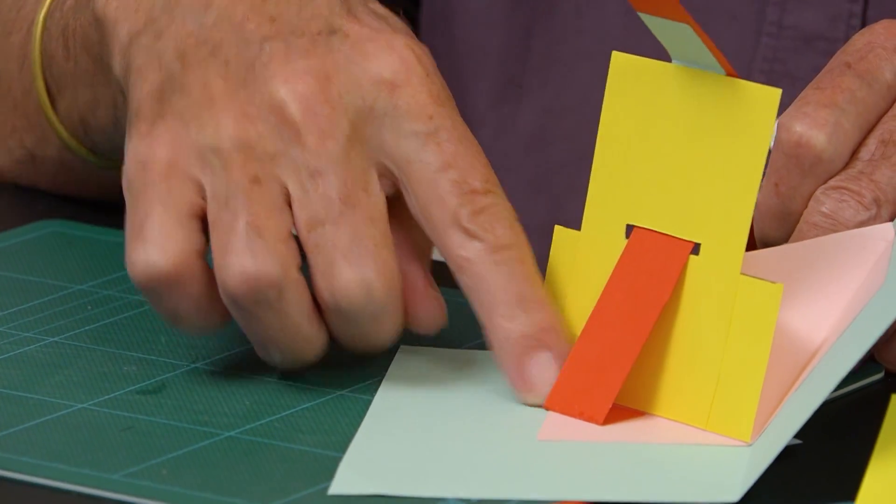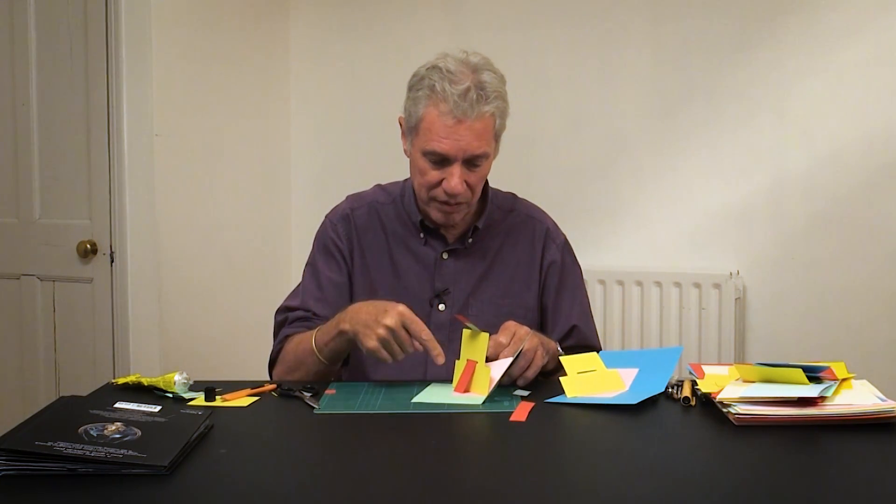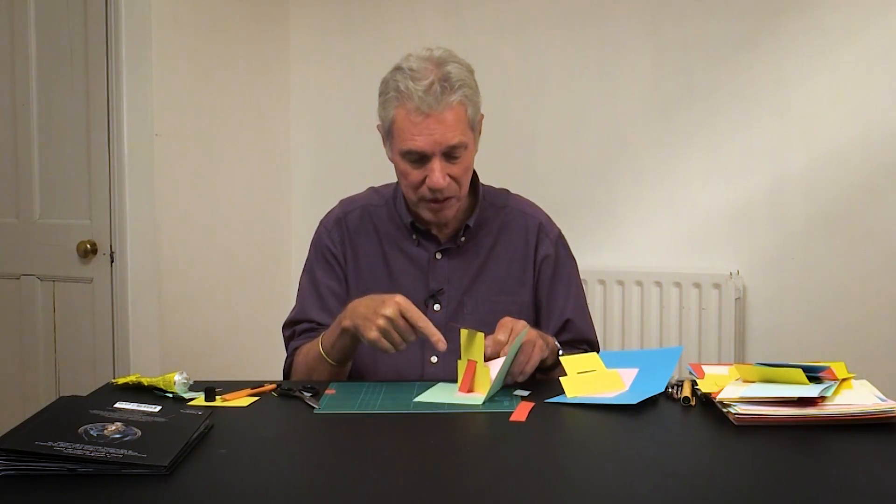So that's going to be a tab that's going to glue it onto the page. Now if we look at this, you'll see there's a tab at the bottom. In the book, this red piece is all made in one piece. But because of the complications with measuring and stuff, I'm going to make it out of two pieces.